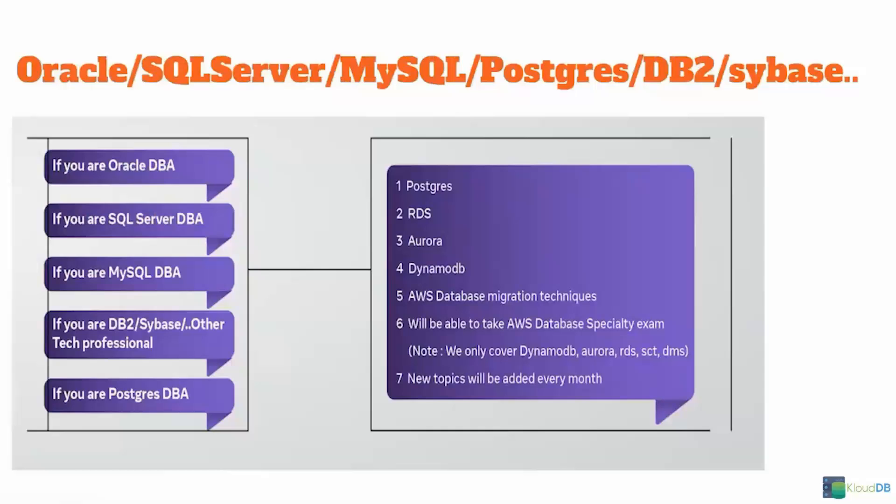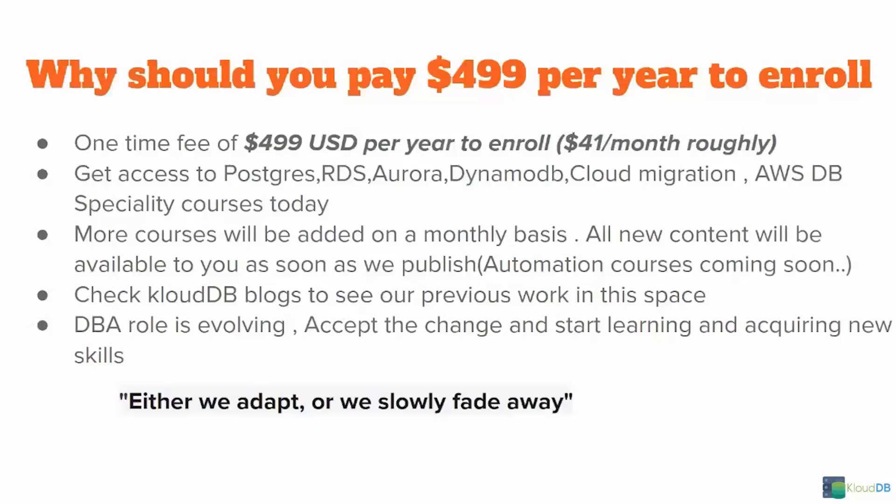Why should you pay $499 per year to enroll? We offer our services for a one-time fee of $499 US per year, roughly $41 per month. With this, you get access to all current courses, along with any added within your year of enrollment. You'll get access to Postgres, RDS, Aurora, DynamoDB, Cloud Migration, and AWS DB Specialty courses today. More courses will be added monthly and all new content will be available to you as we publish it. Automation courses are coming soon. You can check our CloudDB blogs to see our previous work. The DBA role is evolving — accept the change and start learning and acquiring new skills. Either we adapt, or we slowly fade away.